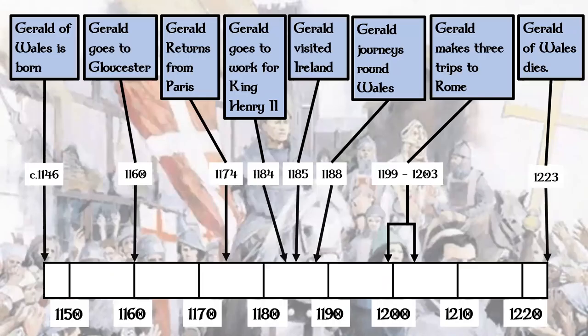Now you've all finished that task, we're going to move on to the timeline of Gerald of Wales's life. In circa 1146, Gerald of Wales is born. In 1160, at the age of 14, he moved to Gloucester to live in a church with priests in order to train. Following this, he then moves to Paris to train as a priest again, and he returns from Paris in 1174. In 1184, Gerald goes to work as a priest for King Henry II. In 1185, Gerald, along with the son of King Henry II, visits Ireland, and on his travels he writes about the sights he sees and the life of the Irish people.